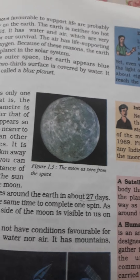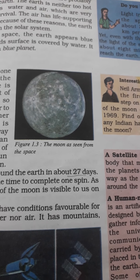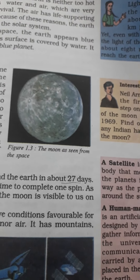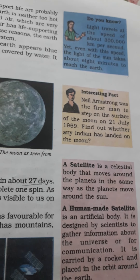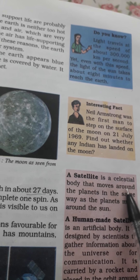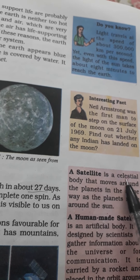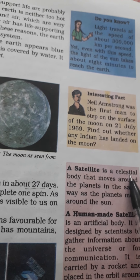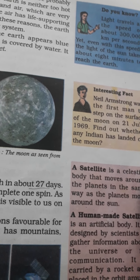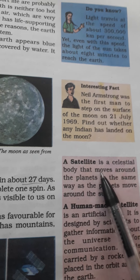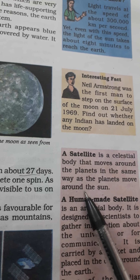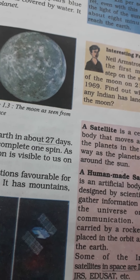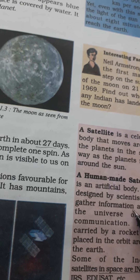We have natural satellite and the man-made satellite. Natural satellite is the moon. A satellite is a celestial body that moves around the planet in the same way as the planet moves around the sun. Celestial means a shining object — you can say a sun or star. So, what is the use of satellites?